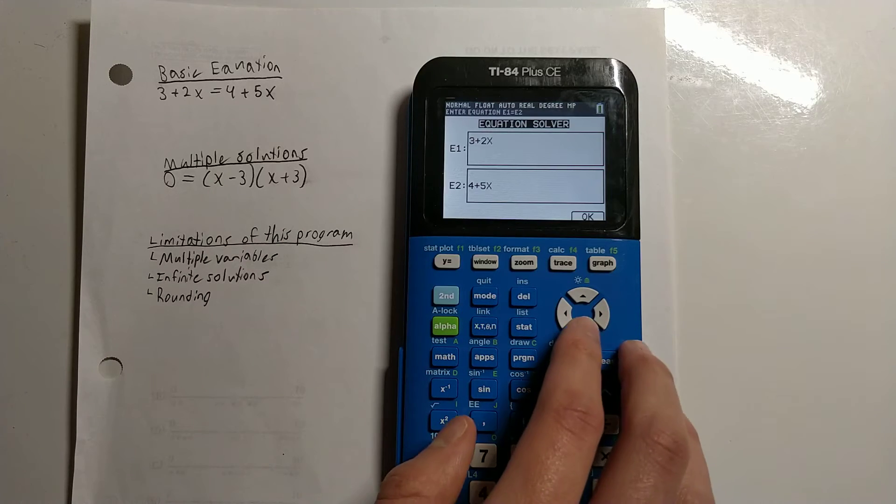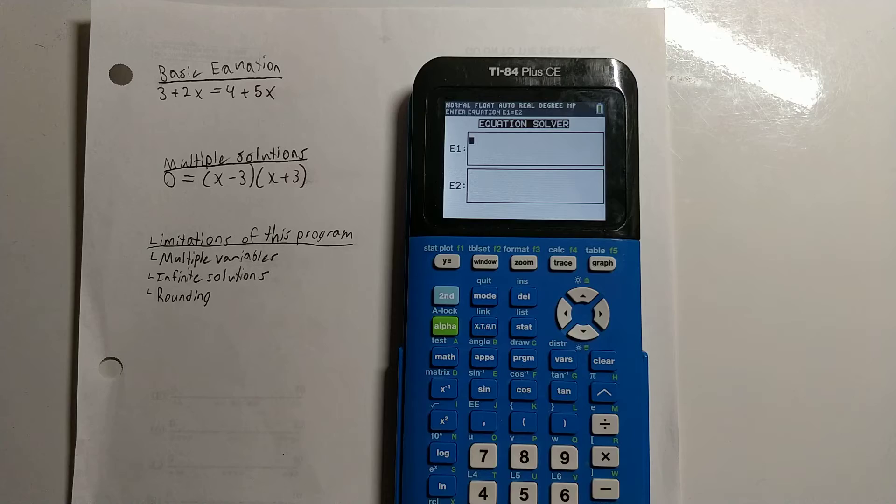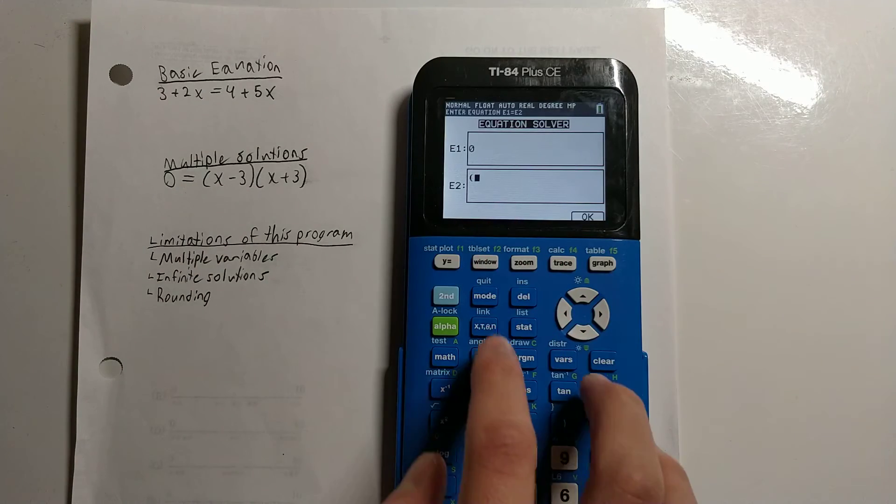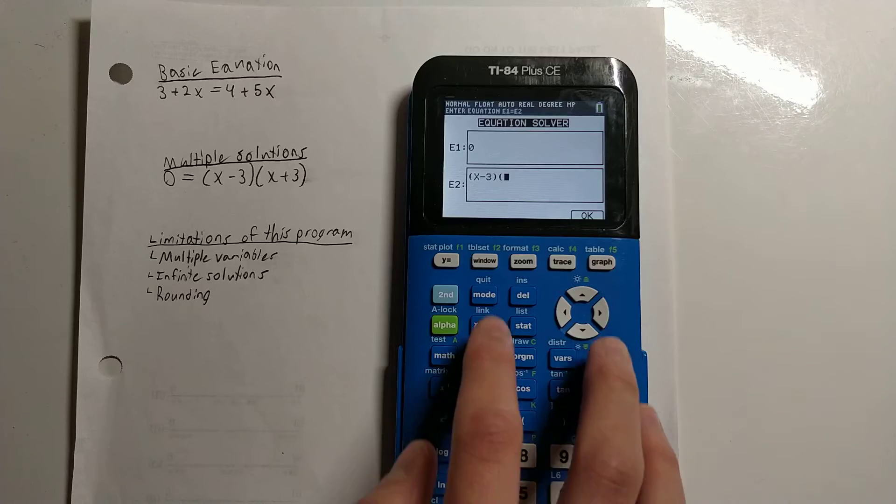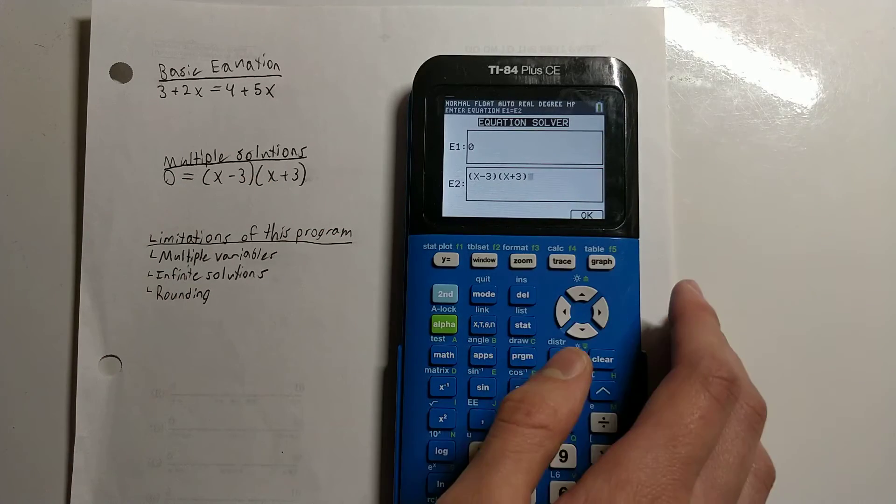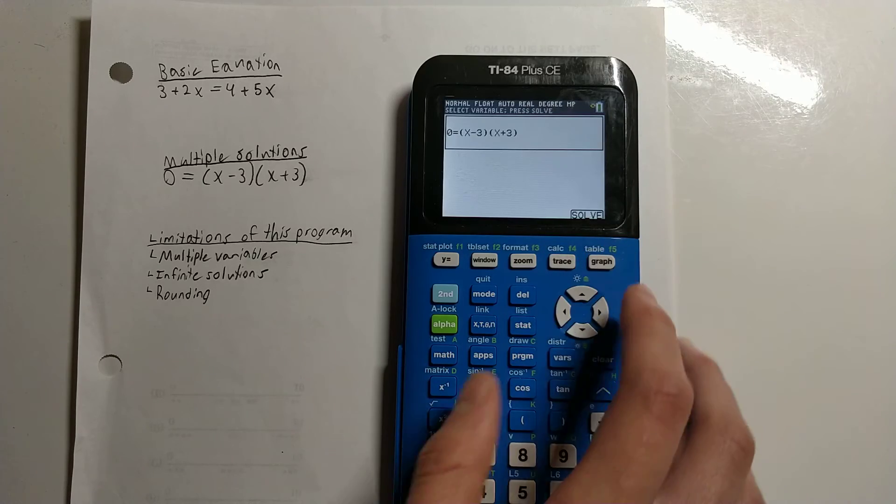Let's go back to the equation solver and see what it tells us. So 0, the left side of the equation. The right side of the equation would be (x-3)(x+3), because this is to the right side of the equal sign. Press OK, which is the graph button.